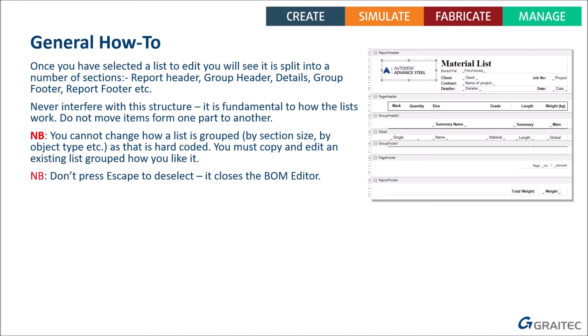Something that catches me out every day: if you've got a box selected and want to deselect it, do not hit Escape. In AutoCAD or Advanced Steel you'd hit Escape to deselect, but in the BOM Editor hitting Escape will close the editor completely and you'll lose all the changes you just made. To deselect, you just have to go and select something else.